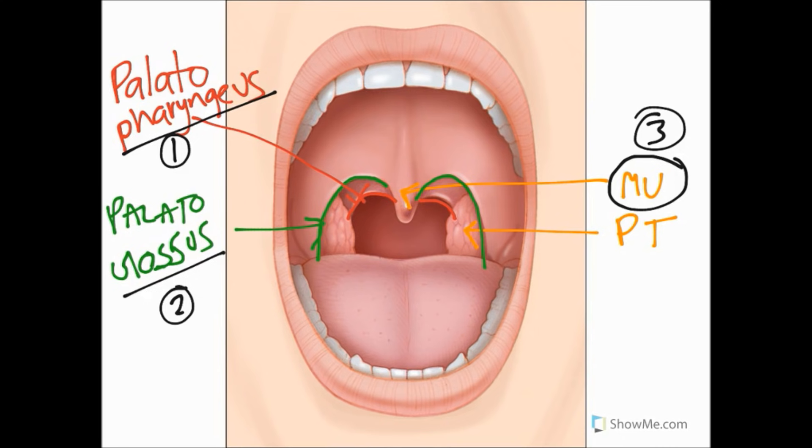The palatopharyngeus originates from the superior surface of the palatine aponeurosis but inserts into the pharyngeal wall, not onto the tongue. Its job is to depress the soft palate, move the palatopharyngeal arch forward towards the midline, and also acts as a pharyngeal muscle to elevate the pharynx.